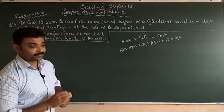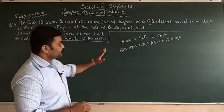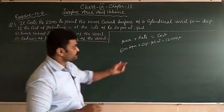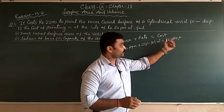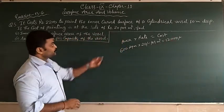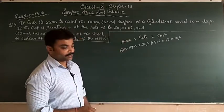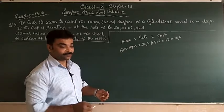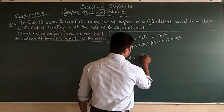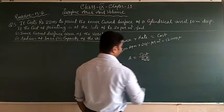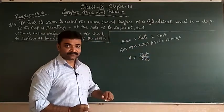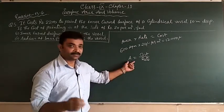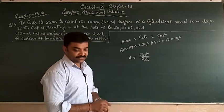Now in this question there is a slight difference. In this question you are given Rs 2200 as the total paint cost, that means cost is given. Rate is also given, Rs 20 per meter square. So we will find area. You can easily find area. So what is the formula? Area is equal to cost upon rate. Whatever the total cost is divided by the rate, that will give us the area.